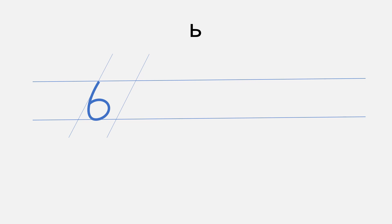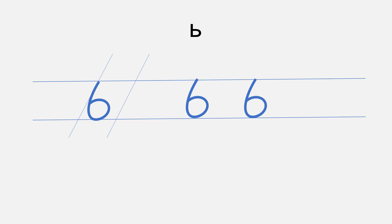Look once again: we start from the top and then we finish it with this oval. Pause the video and practice with the soft sign. You remember that the soft sign is very important — it may dramatically change the meaning of many words in Russian. Practice first.